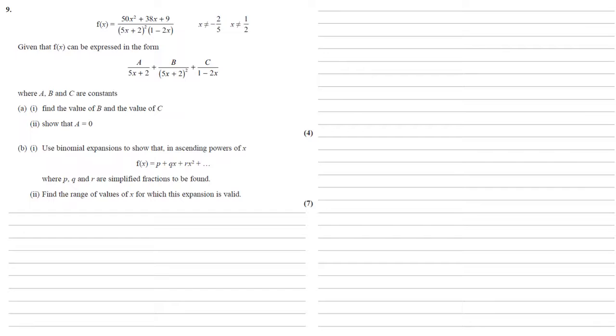f of x equals 50x squared plus 38x plus 9 all over 5x plus 2 all squared times 1 minus 2x.